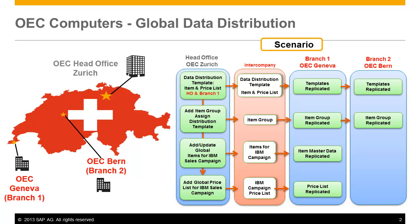A user can define a distribution template to replicate specific global business partners, global item master data, global bill of materials, and master global price lists to specific branch companies.